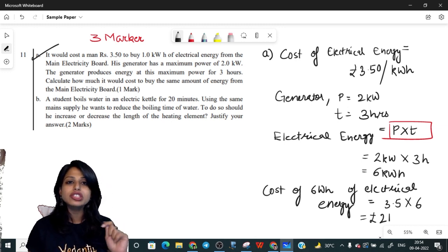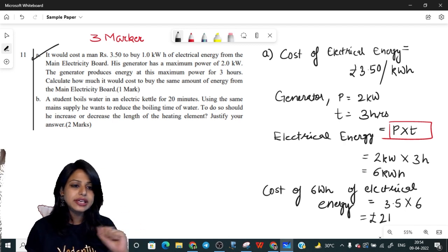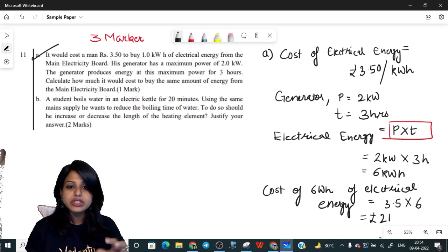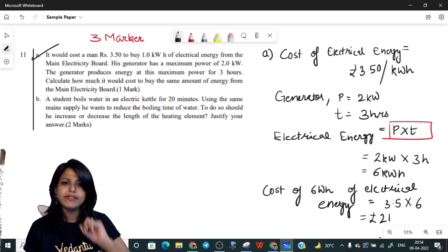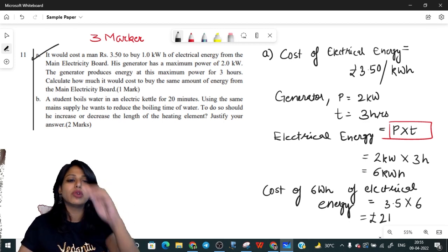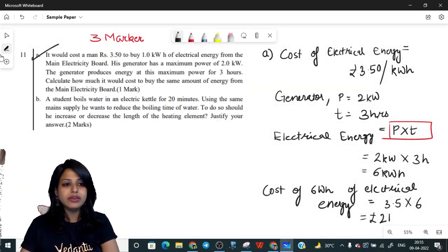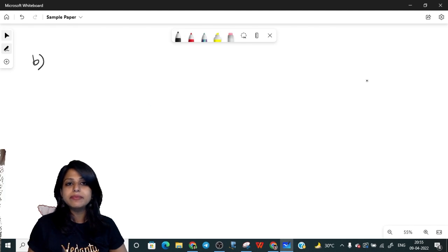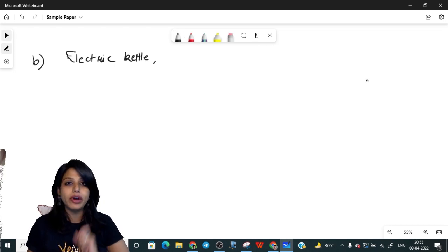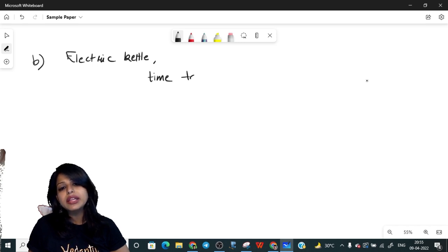Now for part B, which is more important. A student boils water in an electric kettle for 20 minutes using the same main supply. He wants to reduce the boiling time of the water. To do so, should he increase or decrease the length of the heating element? You might get confused whether it's a conceptual or numerical question. For part B, you have an electric kettle which is heating or boiling water, and the time taken to boil water is given to be 20 minutes.